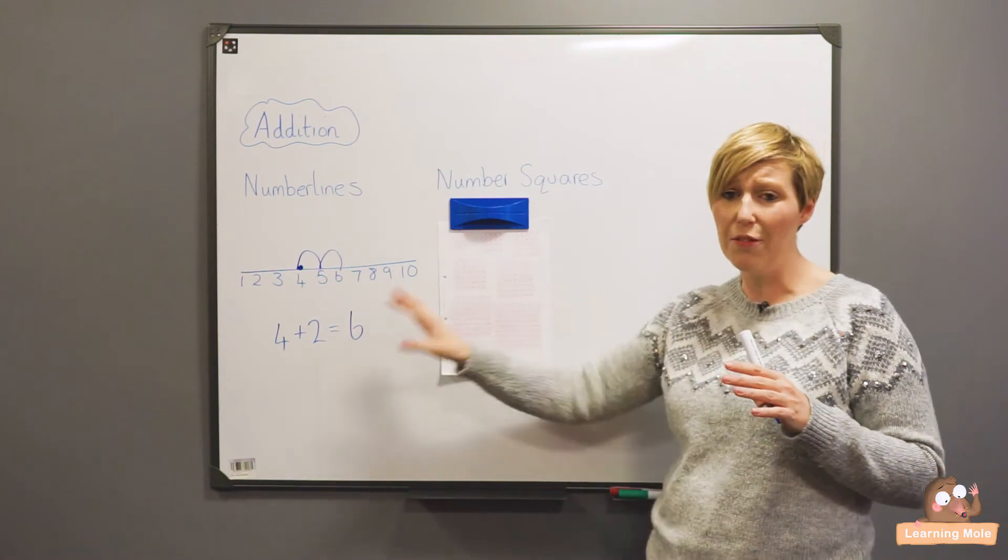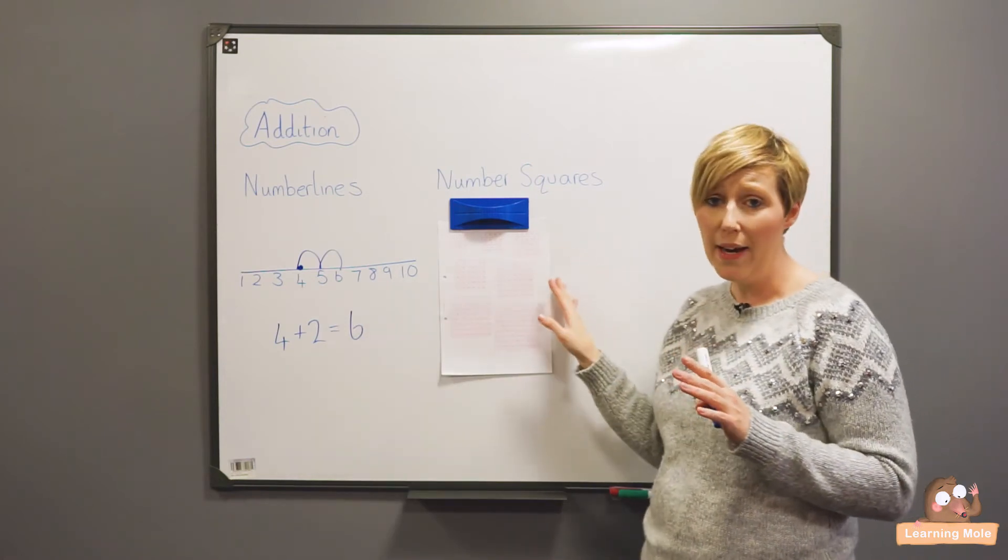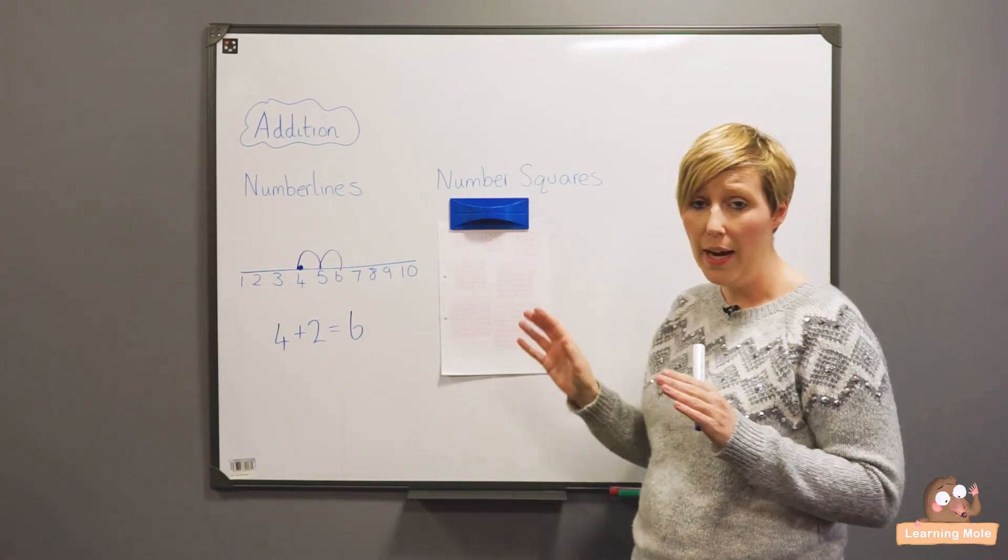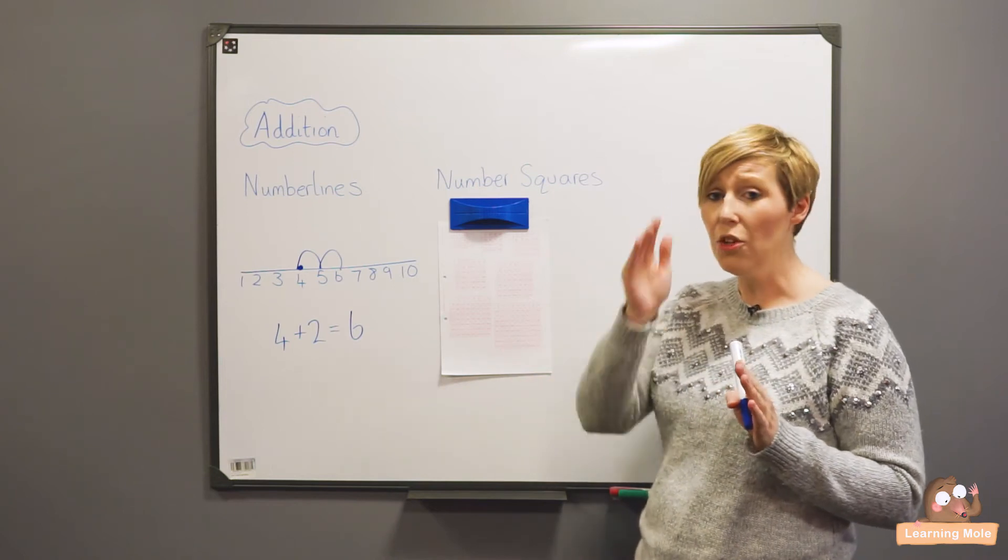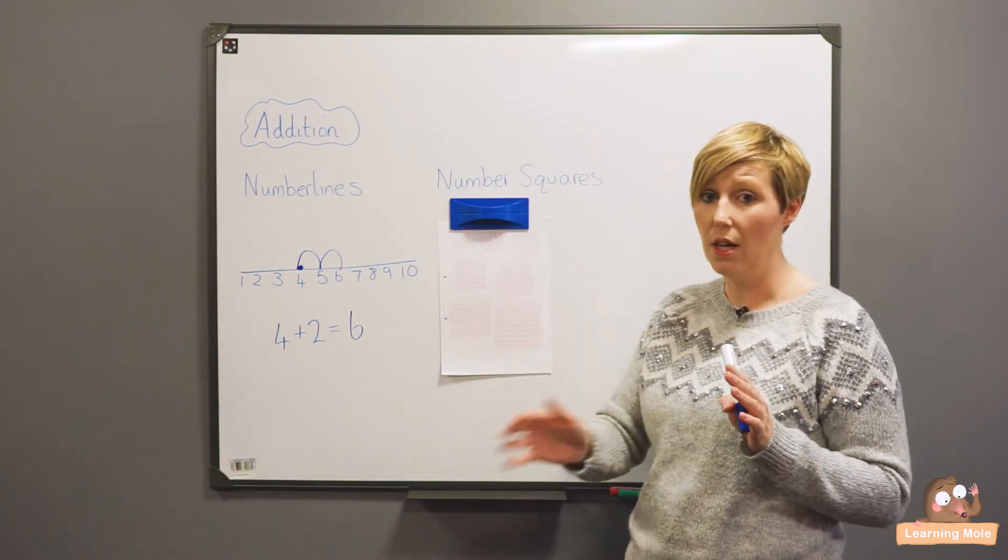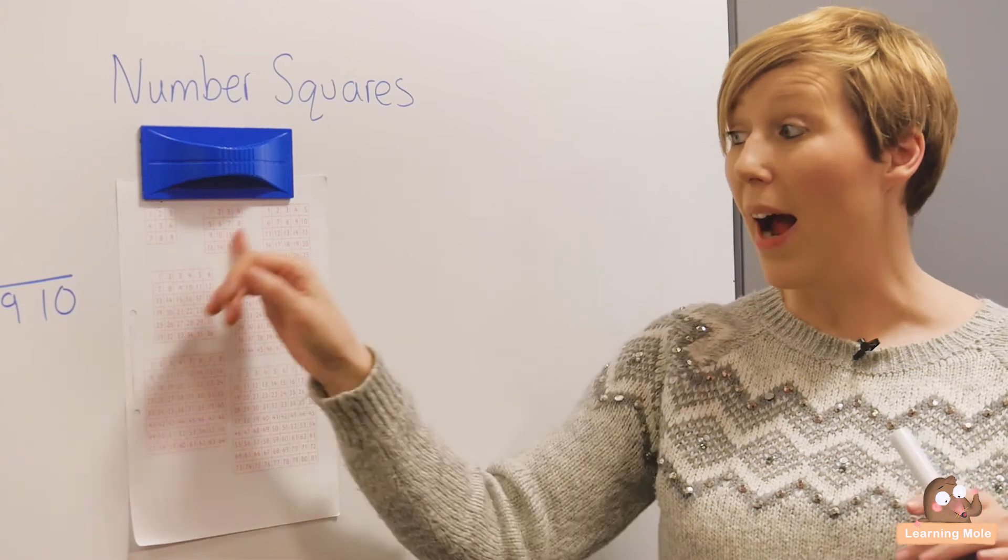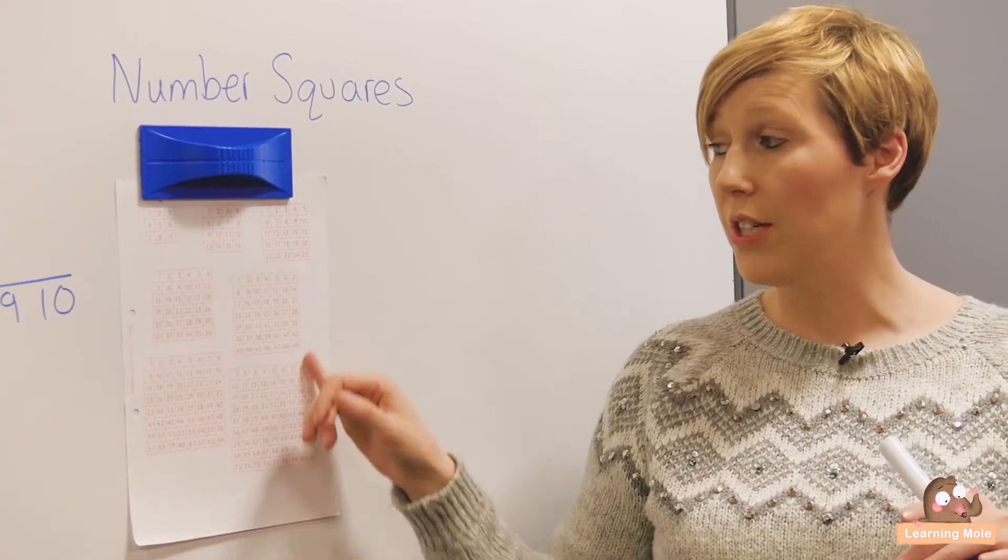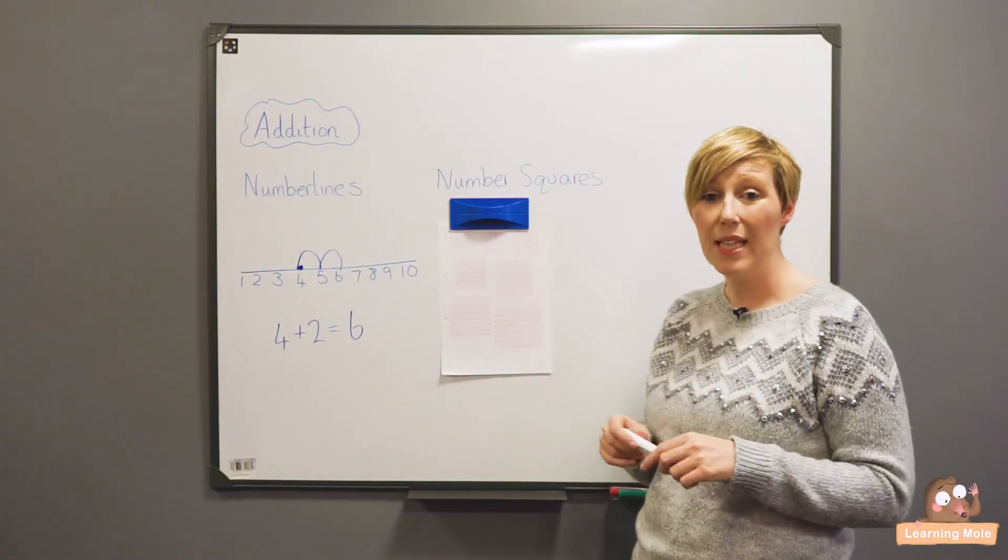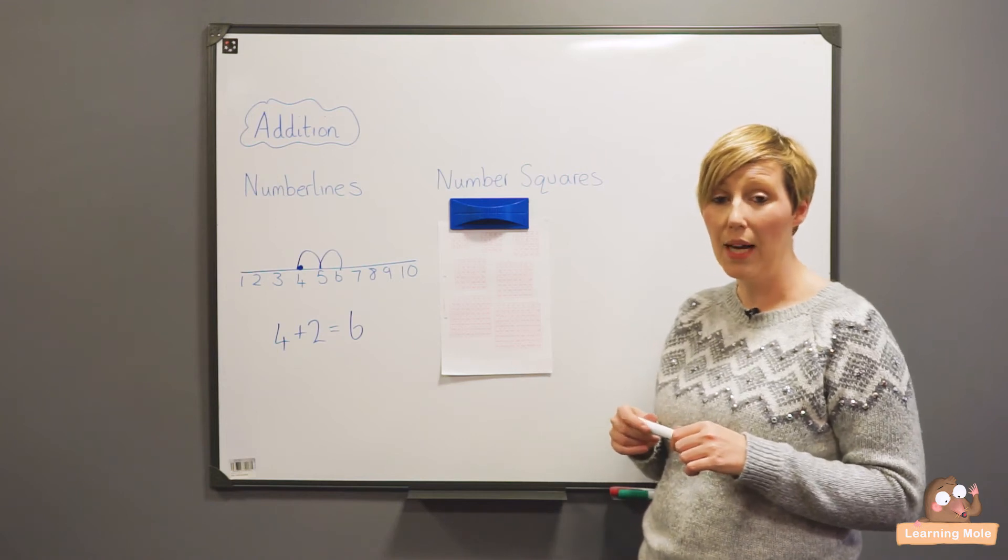Another version of a number line are number squares. You can use a 100 square which is numbered 1 to 10 and downwards, or I've got a variety of different number squares you can give your child to help them. Basically it works exactly the same way as a number line.